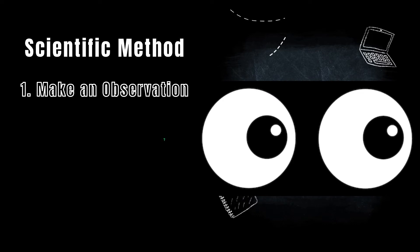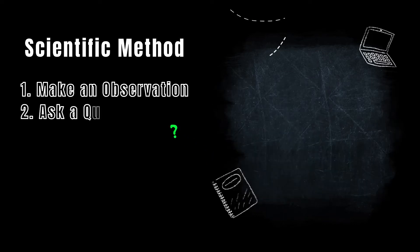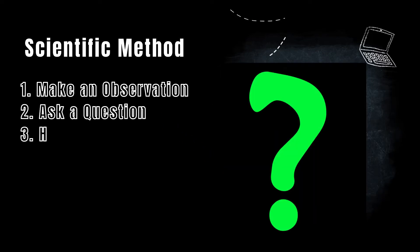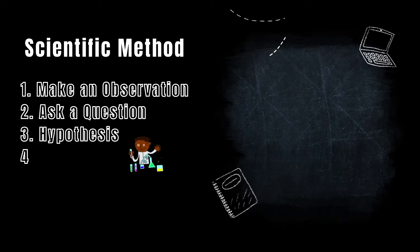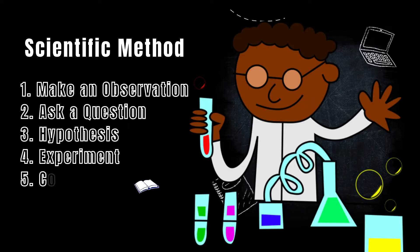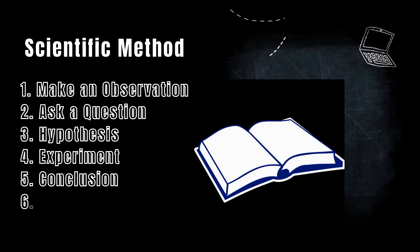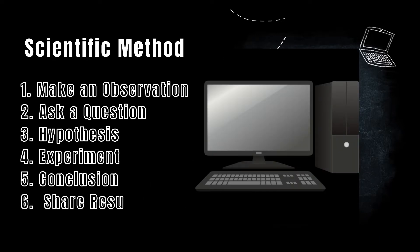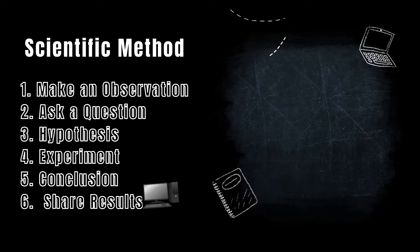Step two is ask a question. Step three is the hypothesis. Four is experiment. Five is make your conclusion and six is share your results. Keep in mind that these steps do not have to be performed in order, but it does have to make sense. So you couldn't do your experiment before you even ask a question or come up with your hypothesis.